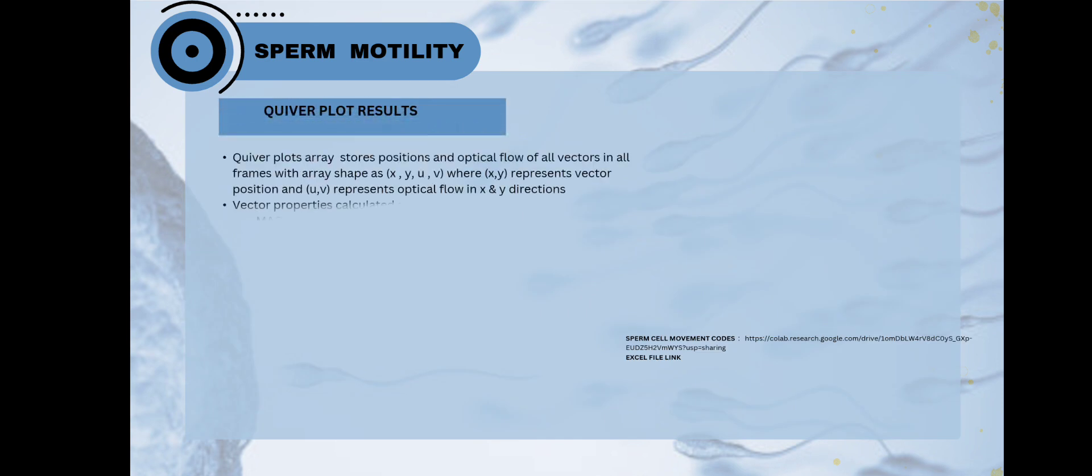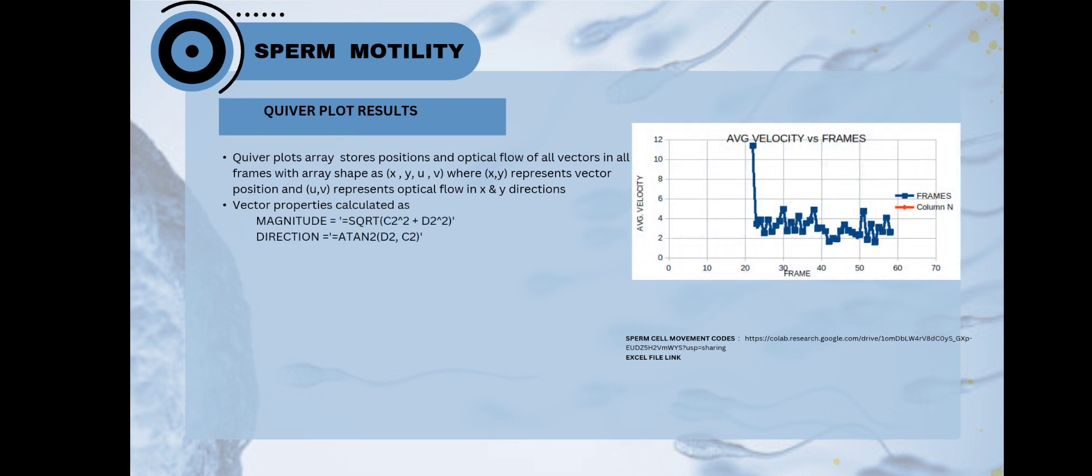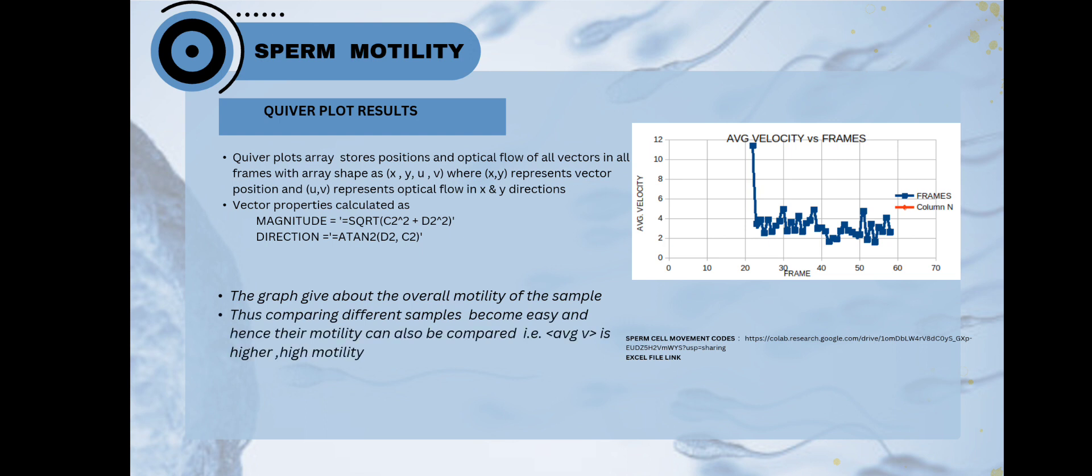From the quiver plot, we can calculate so many things. First, we calculated the positions and after that the magnitude and direction simply from running the codes. After that, we use this graph to determine the sperm motility. How can we do that? We can simply overlap the quiver plot with the original videos and then it will give us the vectors which are related to the sperm movement and which are not. This will help us determine the sperm motility.